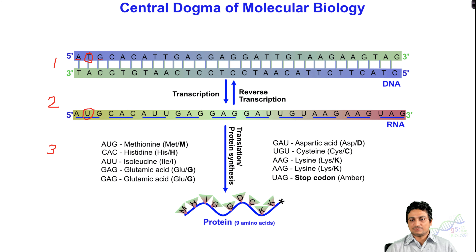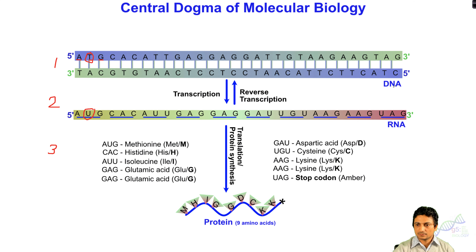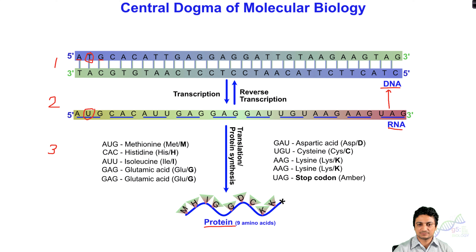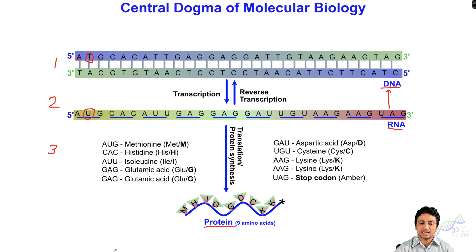Naturally or practically, the information flows from DNA to RNA and RNA to protein. However, in the lab, the information can flow from RNA back to DNA, and this process is called reverse transcription, governed by the enzyme reverse transcriptase. Also, the information can flow from protein back to RNA, but this is not possible naturally or in the lab. However, if we have a protein sequence, we can get the sequence of the RNA, and from the RNA sequence, we can get the DNA sequence.